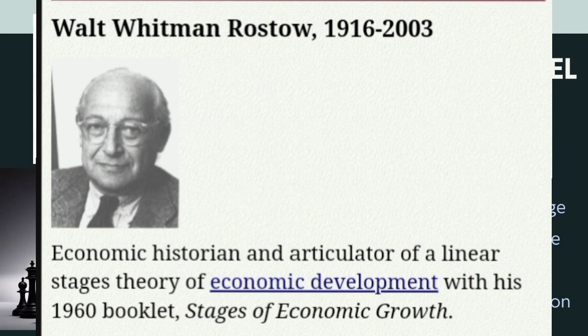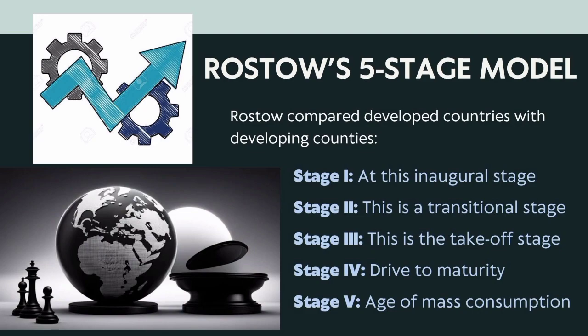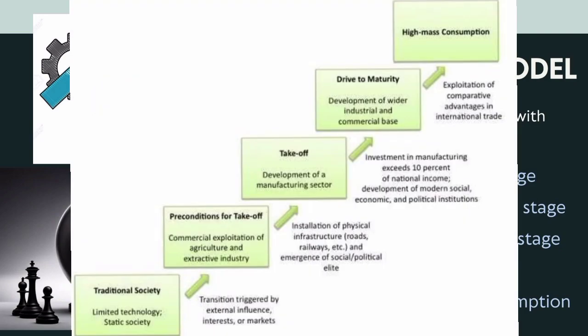Rostow's five-stage model describes the path from underdevelopment to development. The first stage is the traditional society — the inaugural stage — characterized by subsistence agriculture, limited trade, traditional social structures, very basic technology, and very slow economic growth. This describes third world or developing countries. The second stage is the transitional stage — preconditions for take-off — with the emergence of modern industries, infrastructure development, increased investment in education and healthcare, and a social and political climate that is becoming conducive to economic growth.